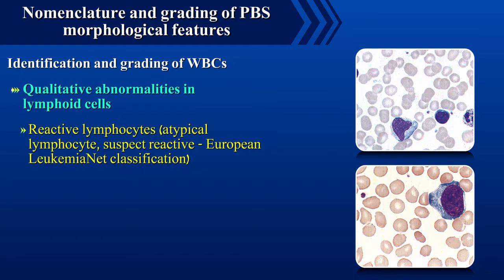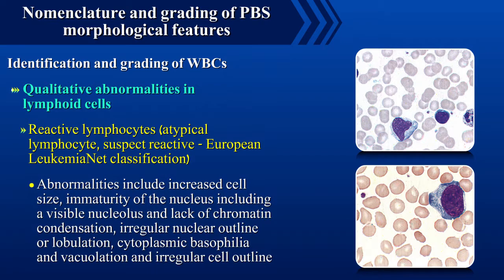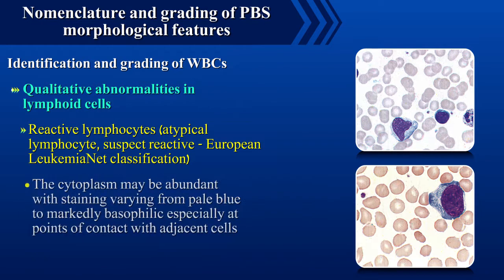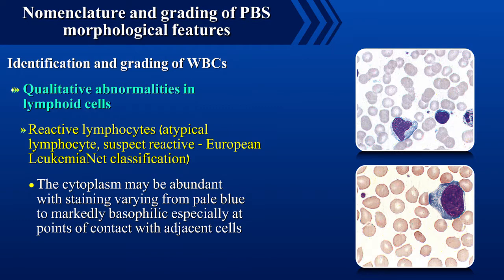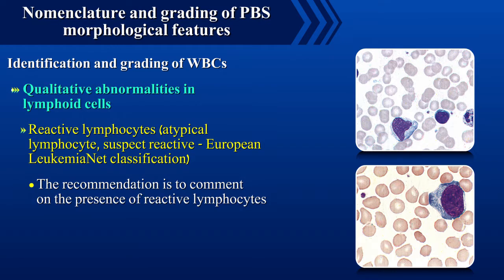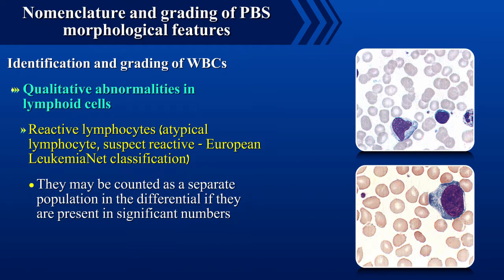Reactive lymphocytes, or atypical lymphocytes suspect reactive according to European Leukemia Network classification, show abnormalities including increased cell size, immaturity of the nucleus with a visible nucleolus and lack of chromatin condensation, irregular nuclear outline or lobulation, cytoplasmic basophilia and vacuolation, and irregular cell outline. The cytoplasm may be abundant with staining varying from pale blue to markedly basophilic, especially at points of contact with adjacent cells. The recommendation is to comment on their presence, and they may be counted as a separate population in the differential if present in significant numbers.